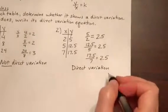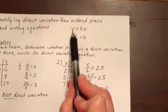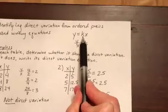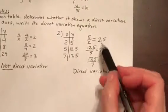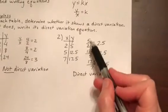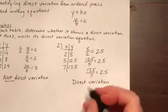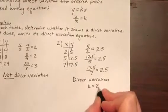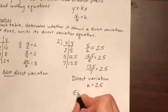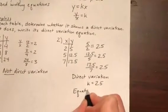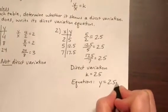And so we're supposed to write the direct variation equation. In other words, the y equals kx with the specific k plugged in. So we notice that our constant of variation, our y to x in each one of these pairs, is 2.5. So k equals 2.5. And so our equation, then, is y equals 2.5x.